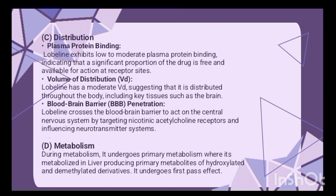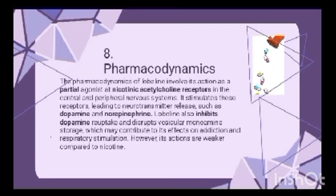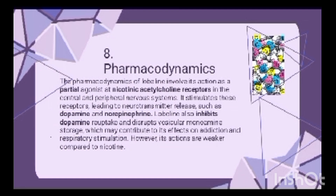After absorption, Lobeline distributes throughout the body. Due to a low volume of distribution, it reaches key tissues including the brain, but exhibits low to moderate protein binding — meaning most of the drug is free. Notably, Lobeline can cross the blood-brain barrier. During metabolism, it undergoes primary metabolism in the liver with a half-life of approximately one to two hours, and is ultimately excreted in urine.